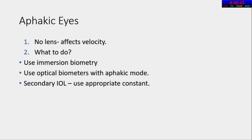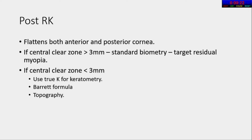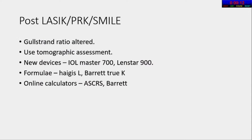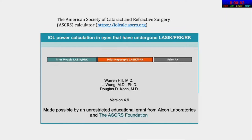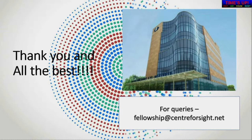Special situations include pseudophakic eyes, keratoconus, and post-VR surgery where silicone oil affects the velocity of ultrasound - all these change the AL power calculation. An optical biometer gives a better answer instead of a wrong estimation of AL. For normal A-scan in silicon-filled eyes, do a 2-23 overcorrection. Post-RK: if the zone is clear, do standard biometry; if not, use 2K. Post-LASIK, the Gullstrand ratio has changed, so use newer devices and formulas like Haigis-L and Barrett 2K. Online calculators like ASCRS or the Hill RBF formula are also available. Repeat measurements if they are outside range.